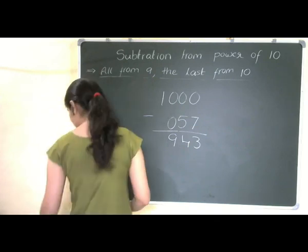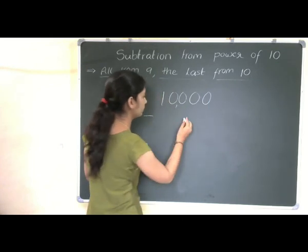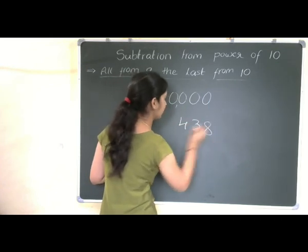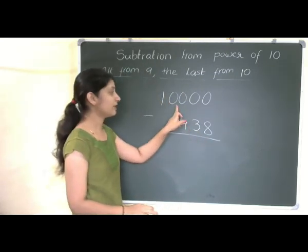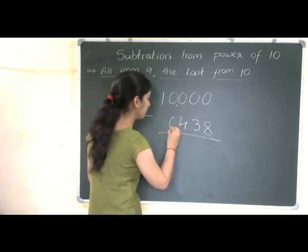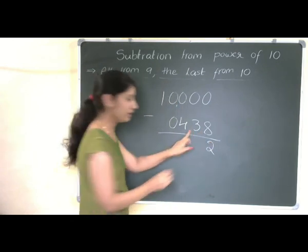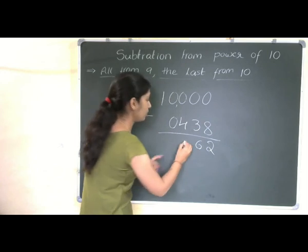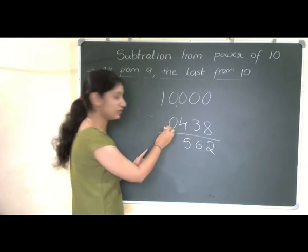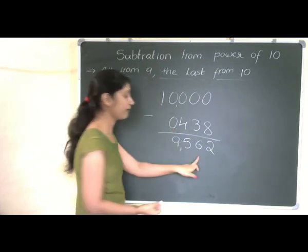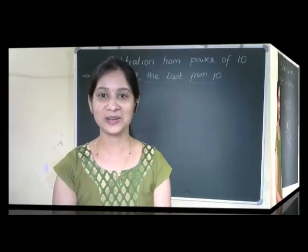Let us solve one more problem: 10000 minus 438. The number of digits in 438 is not the same as the number of zeros in 10000, so we write 438 as 0438. Now: 10 minus 8 is 2, 9 minus 3 is 6, 9 minus 4 is 5, and 9 minus 0 is 9. So 9562 is the answer.